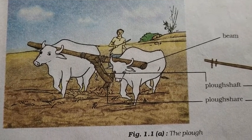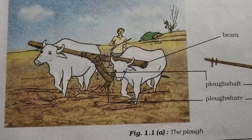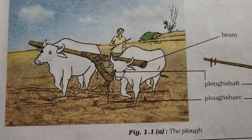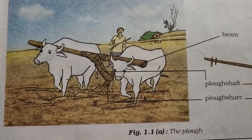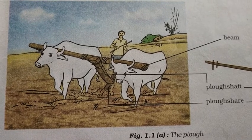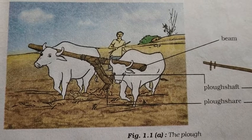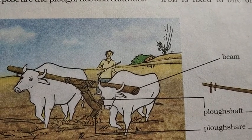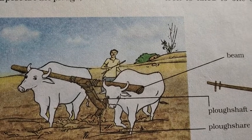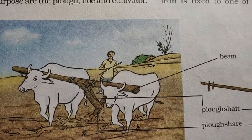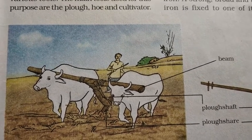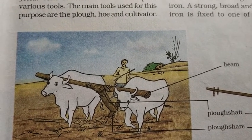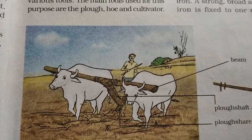When animals die and are buried in the soil, earthworms and microorganisms digest them, convert the materials, and release nutrients back into the soil, which are then absorbed by plants again. Only a few centimeters of the top layer of soil support plant growth, and turning and loosening the soil brings nutrient-rich soil to the top so that plants can use these nutrients.